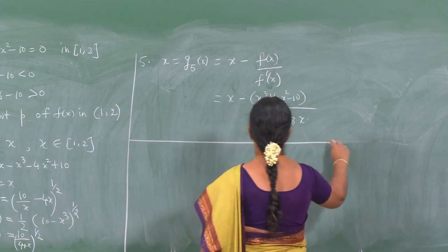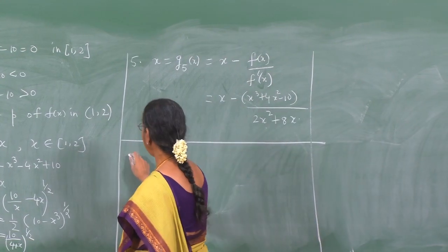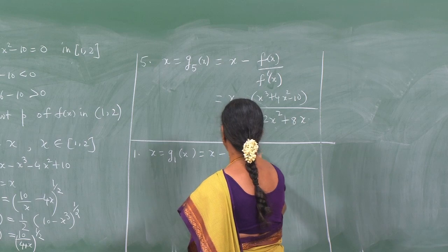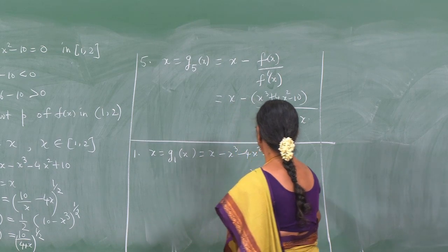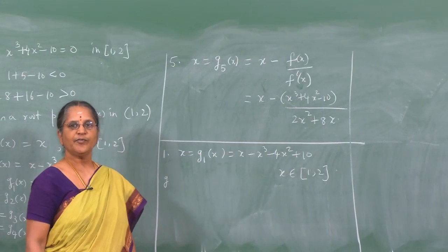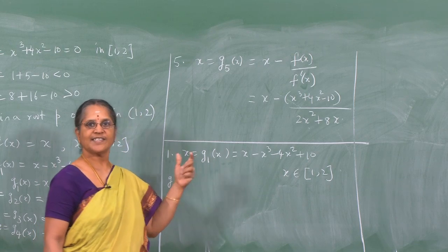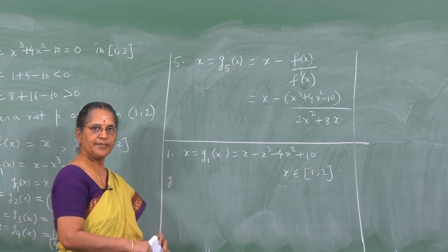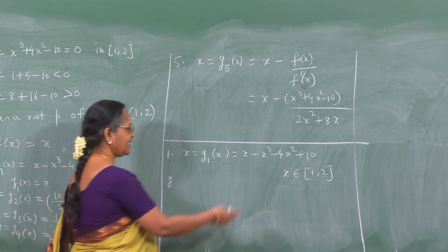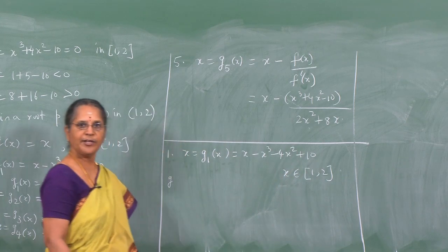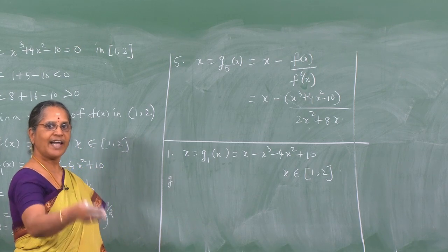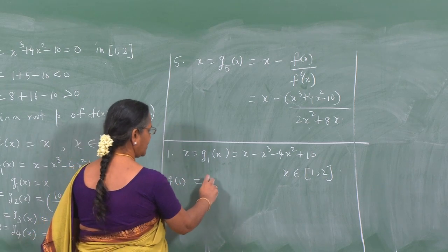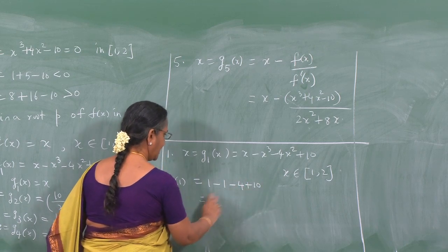Let us consider the first form: x = g₁(x) = x - x³ - 4x² + 10 on [1, 2]. We check whether g₁ satisfies the sufficient conditions for the existence and uniqueness of a fixed point. It is continuous, being a polynomial. However, g₁(1) = 1 - 1 - 4 + 10 = 6.